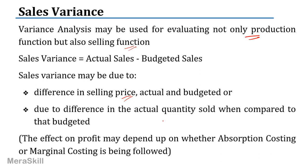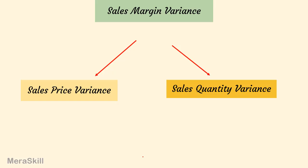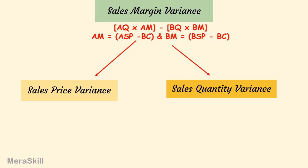The effect on profit may depend on whether absorption costing or marginal costing is being used. The sales margin variance — and the margin I am talking about is the profit — is normally taken on the sales margin. This is actual quantity into the actual margin, minus budgeted quantity into budgeted margin.